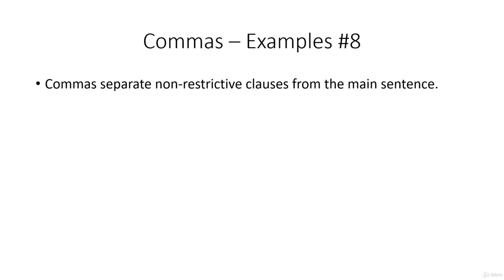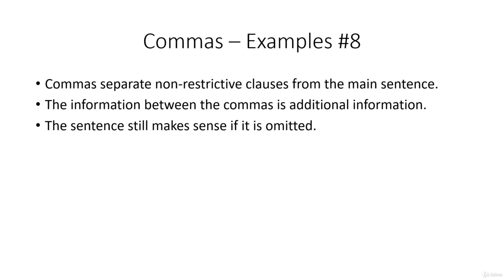And commas also separate non-restrictive clauses from the main sentence. Now we know it's a non-restrictive clause, or a non-essential clause, because the information between the commas is additional. And if we were to leave this information out, the sentence would still make sense. So, my friend, John, plays drums in a band. Now if we left out the bit in the middle, it would read, my friend plays drums in a band, which is quite good. My brother, who lives in Rome, has two children. And if we left the part in the middle out between the commas, it would say, my brother has two children.